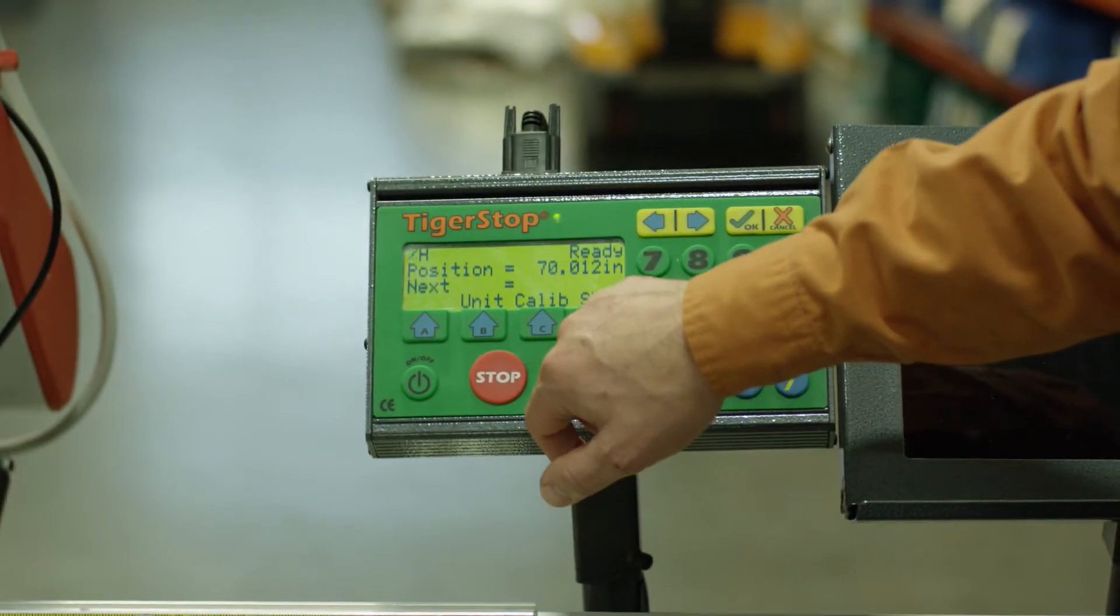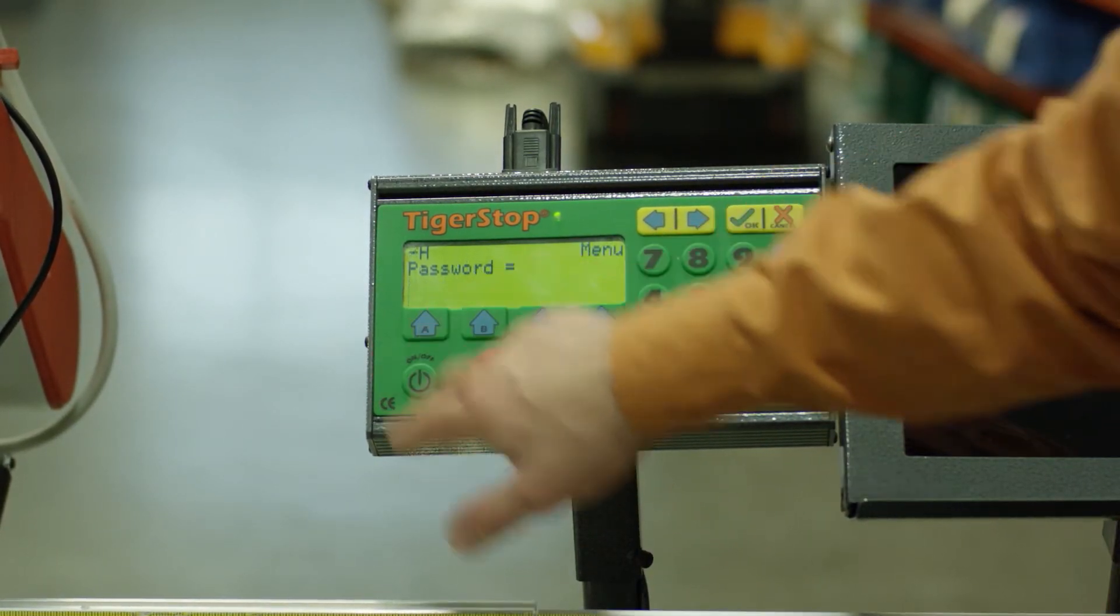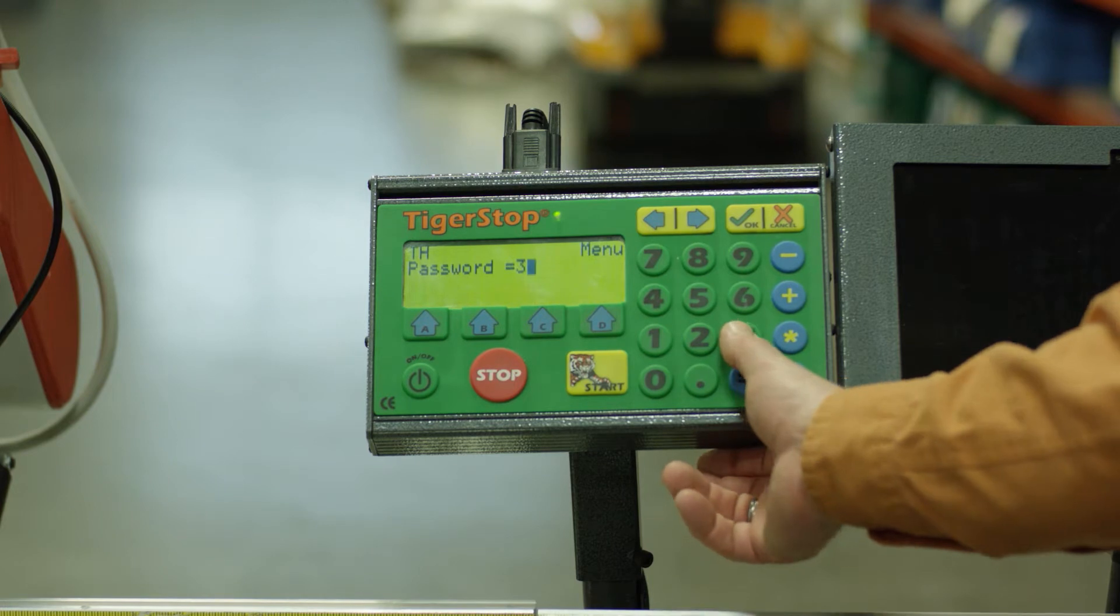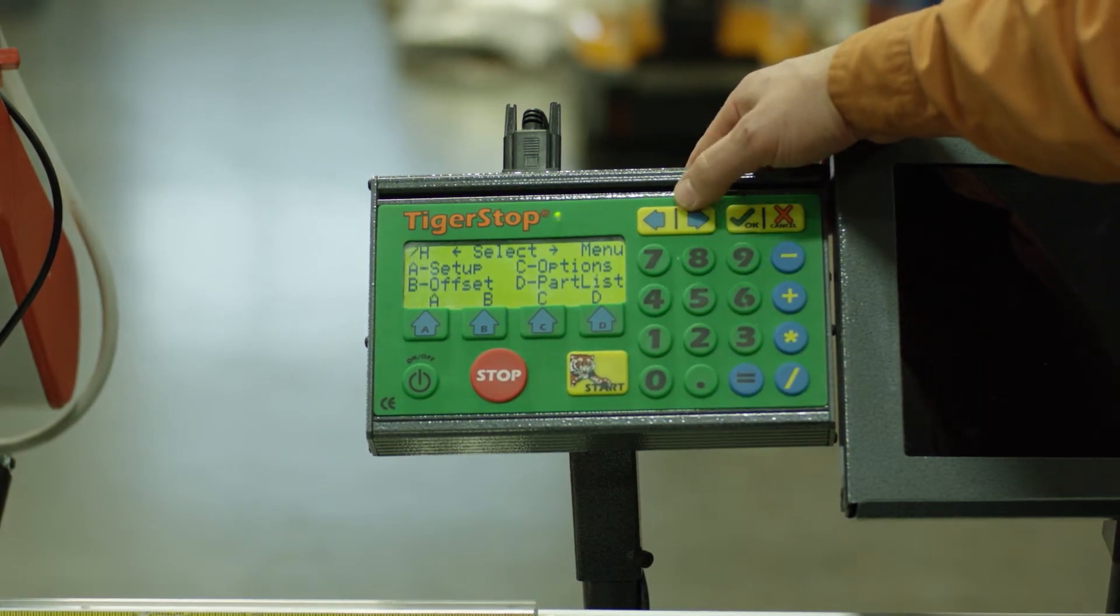So what we're going to do is go into our show menu, we'll go into our standard menu, enter in our password, and we're going to hit the right blue arrow.